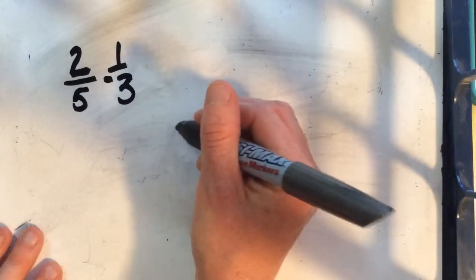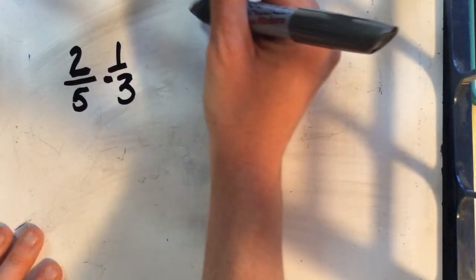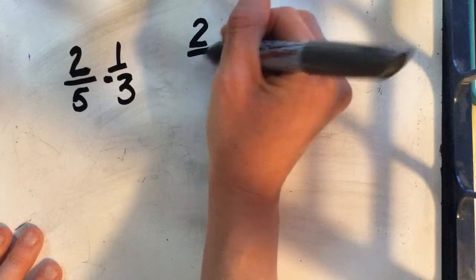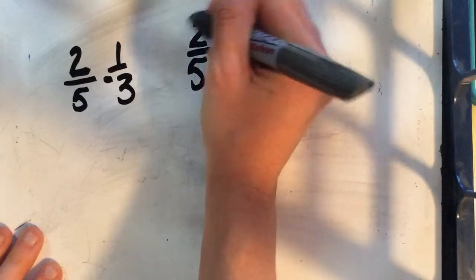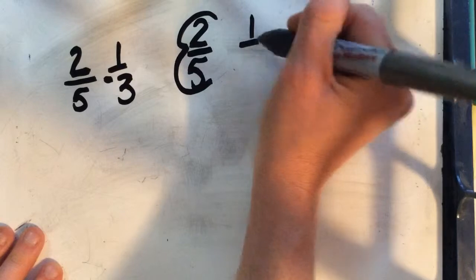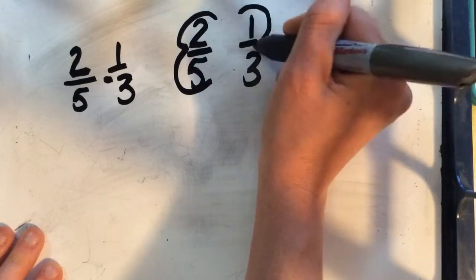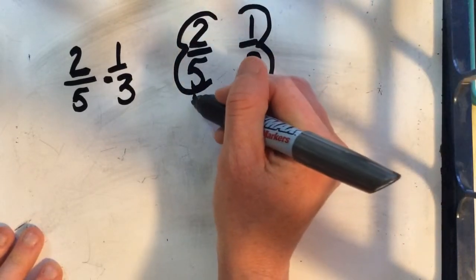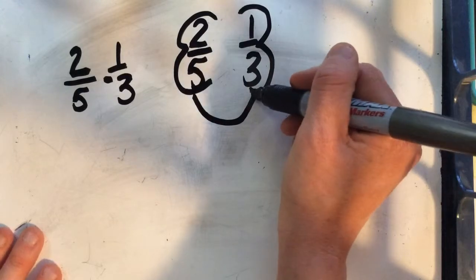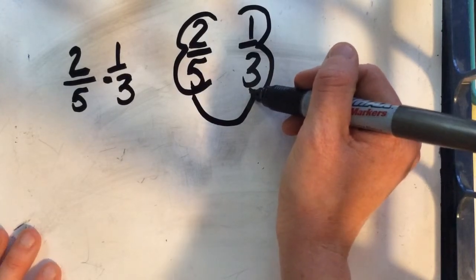Okay, I'm gonna set up my butterfly. So I'll have two fifths on one wing and one third on the other. So I'm gonna find a common denominator. Remember, this may not be the least common denominator. That's why we may have to simplify after we find our answer.